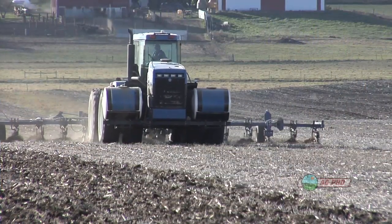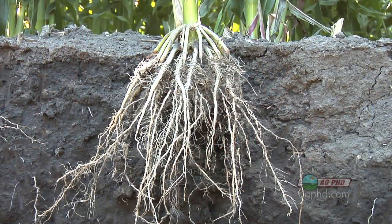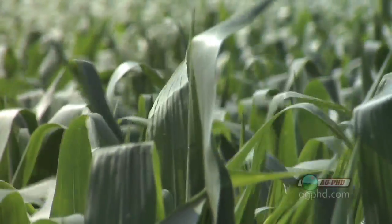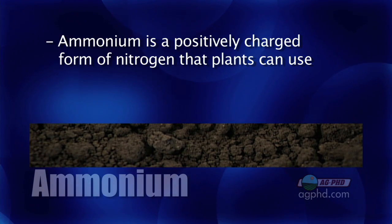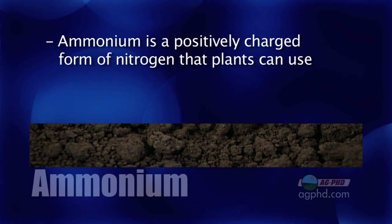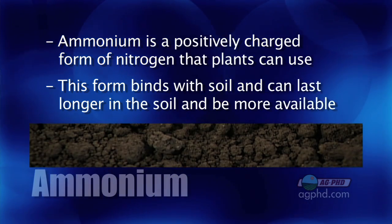For crops, it's really important that nitrogen is in the right form — a positively charged form that will actually bind to soil and be available for crops to use. Crops can use both nitrate and ammonium. Plants will bring in either form and convert it to ammonium inside the plant. So if nitrogen is already in the ammonium state, it requires less energy for the plant. If it's in the nitrate state, the plant can still use it, but has to convert it over to ammonium, which takes more energy. Ammonium is positively charged, so it can attach to soil and remain available for plants longer.